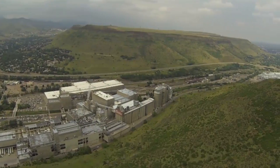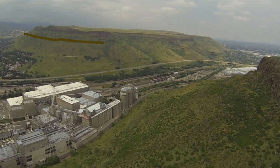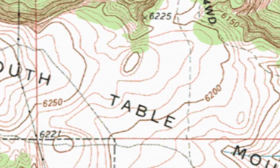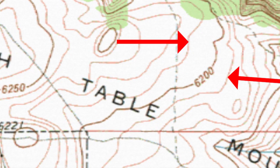A contour line is defined as a line of equal elevation — that is, every point on a single contour line is at the exact same elevation. Each neighboring contour line is an equal difference in elevation above or below that central contour line: one line is an exact distance above it, and the other is the exact same distance below it.